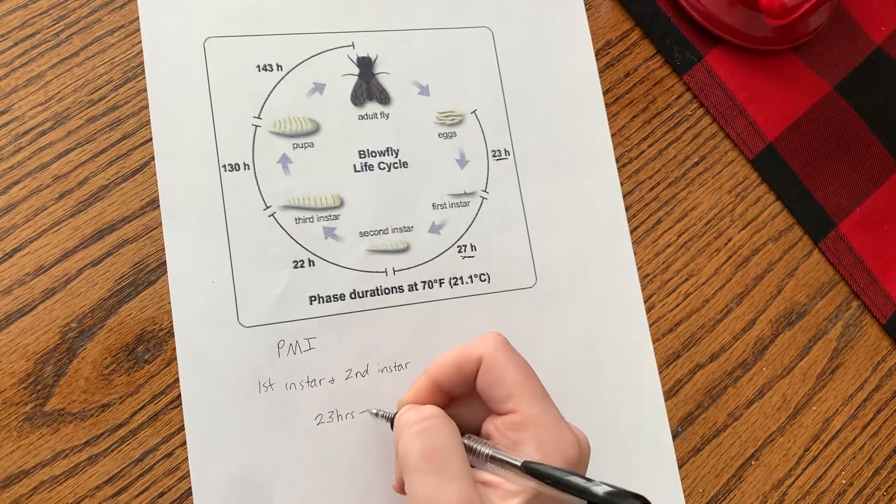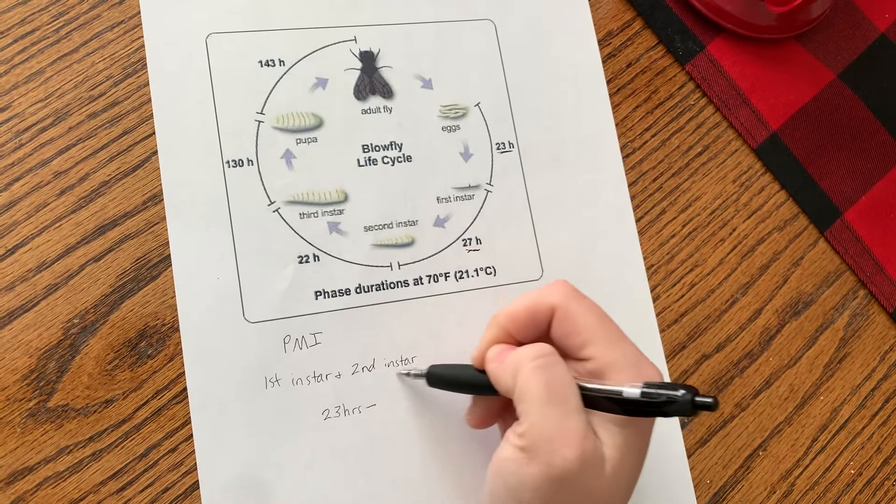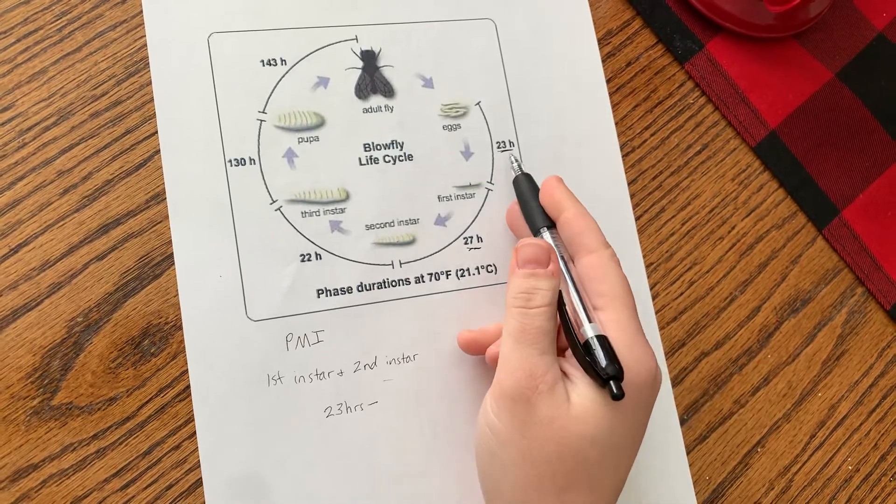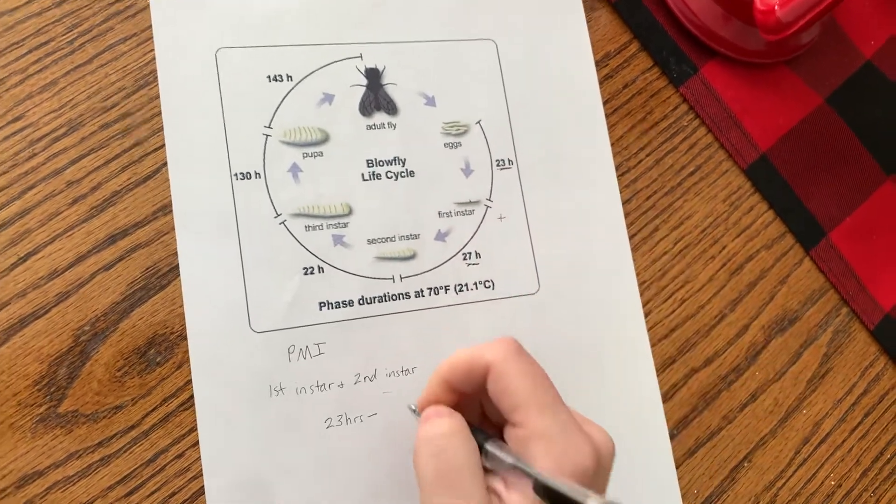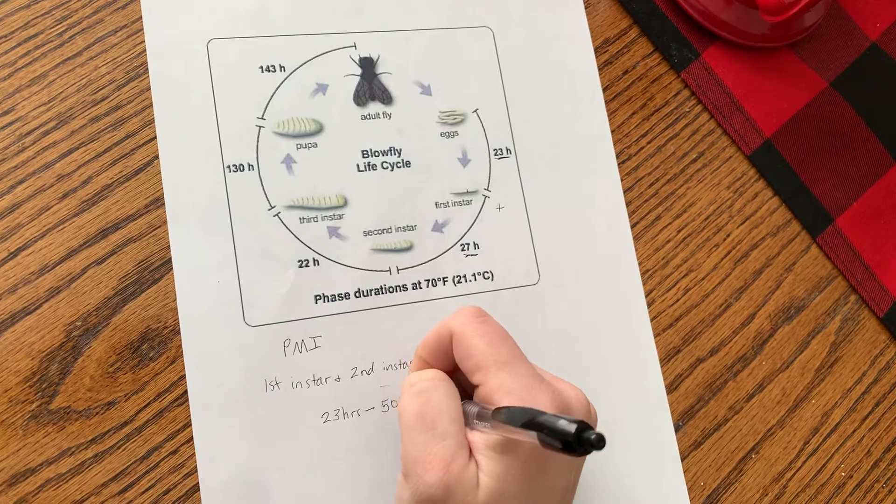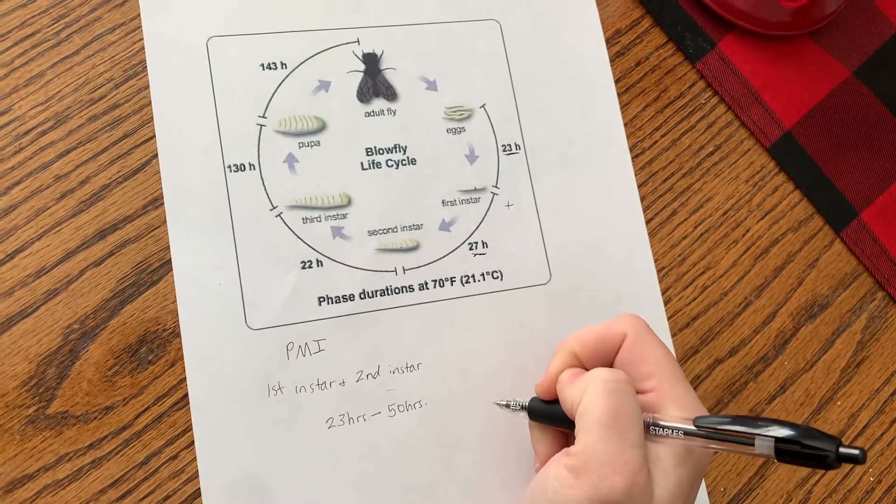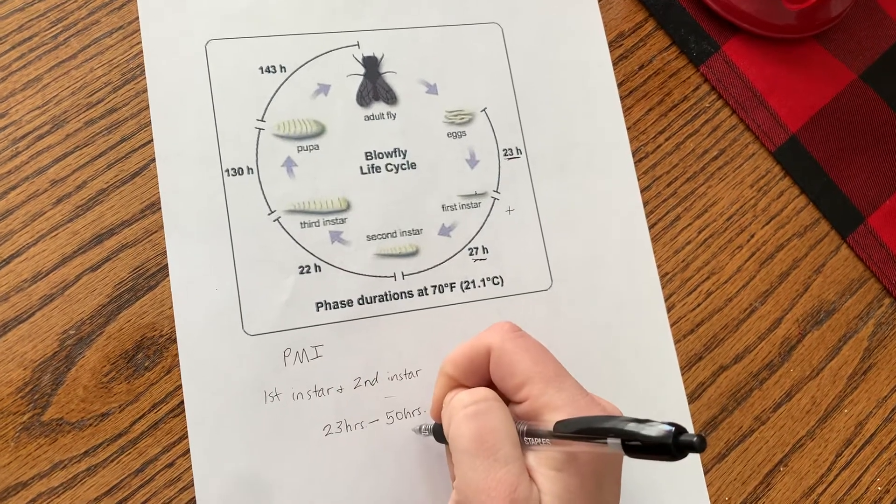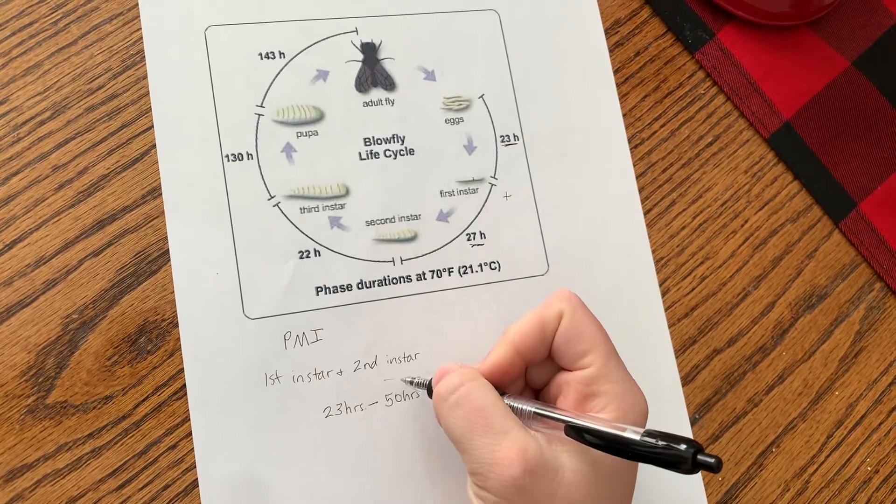But it could be all the way up to this time frame because there are some second instar larvae that we found on the body. So what you're going to do is add 23 hours plus 27 hours and that's going to give you 50 hours. So what we're saying is that it could have been as soon ago as 23 hours, but it may have been as long ago as 50 hours because we found both first instar and second instar.